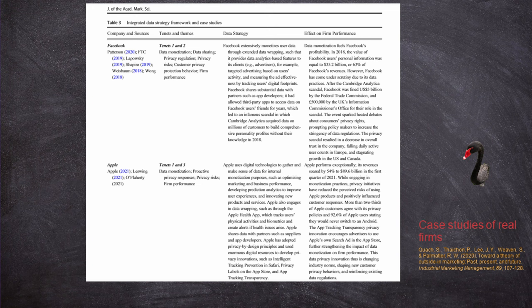Next one is using a case study approach as part of the practical implication. After proving your framework through findings, create a table in the practical implication section talking about how real businesses do things — linking your findings A, B, and C to what real businesses are actually doing in the world today. So it's not just talking about the implication of your research, but linking your implication to what businesses are actually doing. A lot of the time research papers do not have a strong practical implication. Using a real business case study approach is one good way to address this.